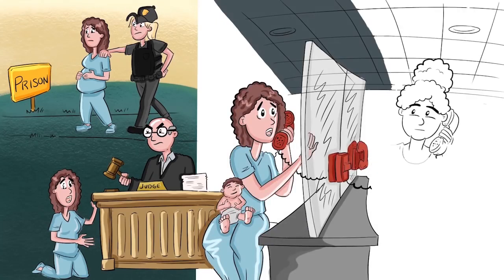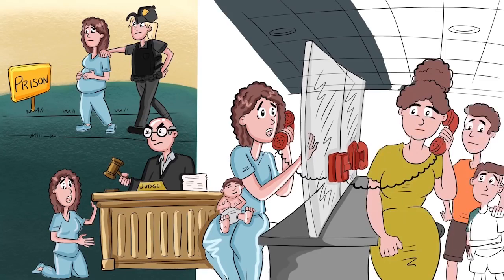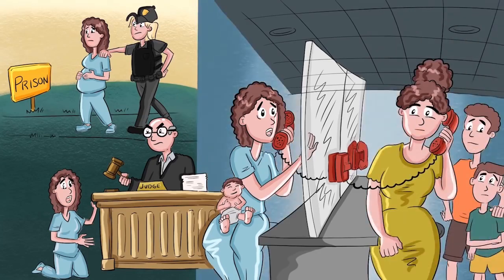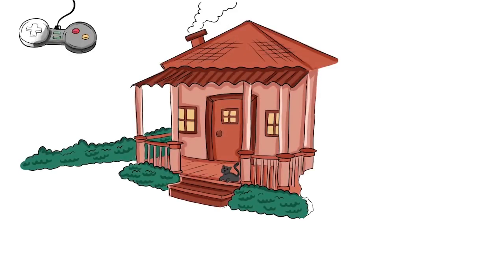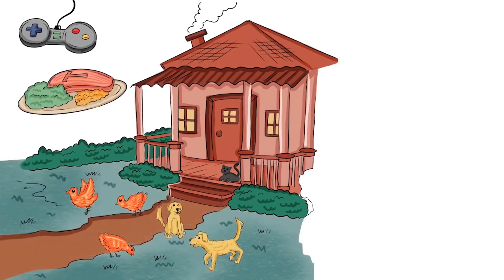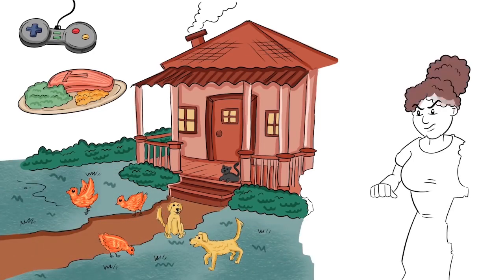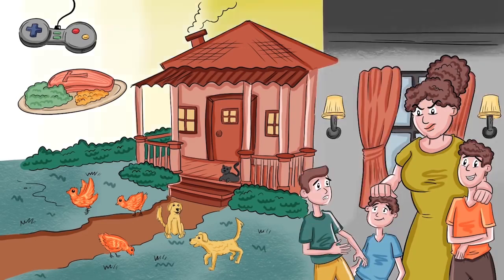At first, my grandma was hesitant because she was already raising my two older brothers, but she knew my mom was desperate. Growing up, my grandma made sure that my brothers and I had everything we wanted. We had video games, delicious southern home cooking, a small house in the countryside and lots of animals. I could tell that my grandma loved me and my oldest brother the most, but I couldn't say the same for my second oldest brother, Jimmy.